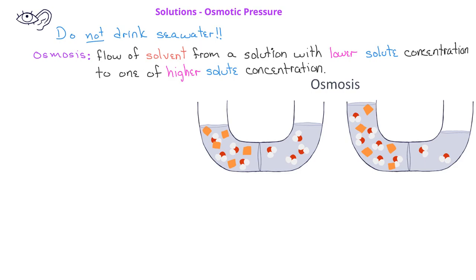If we allow the two solutions to reach equilibrium, we'll see that the water from the right side will move through the semi-permeable membrane to the left side. In the end, we'll see that there's a higher amount of solution on the left side than there is on the right.